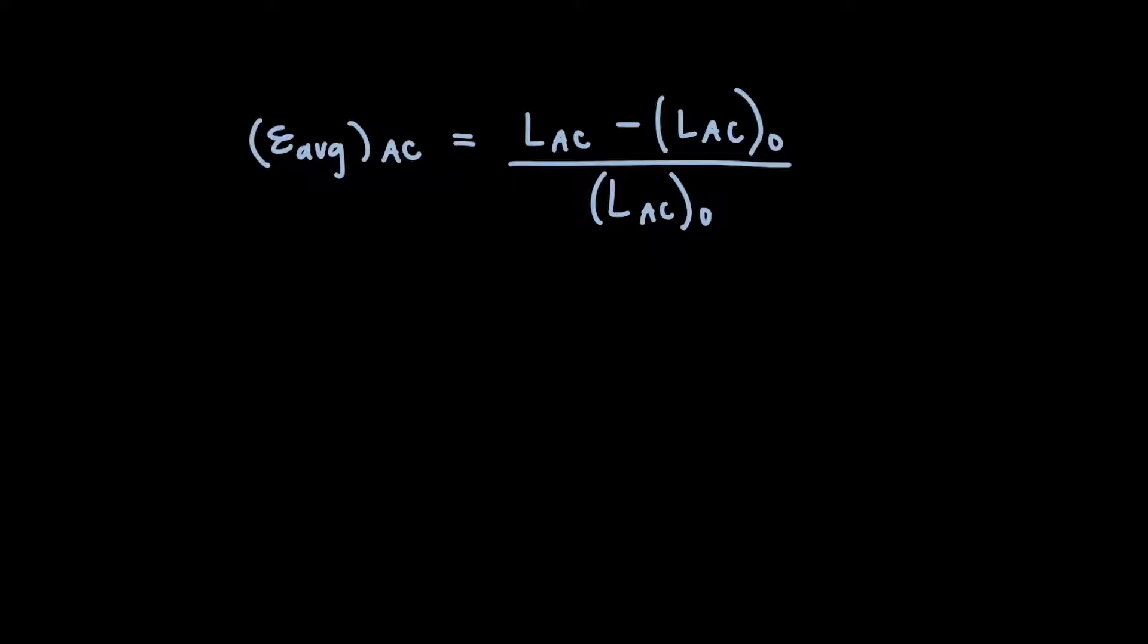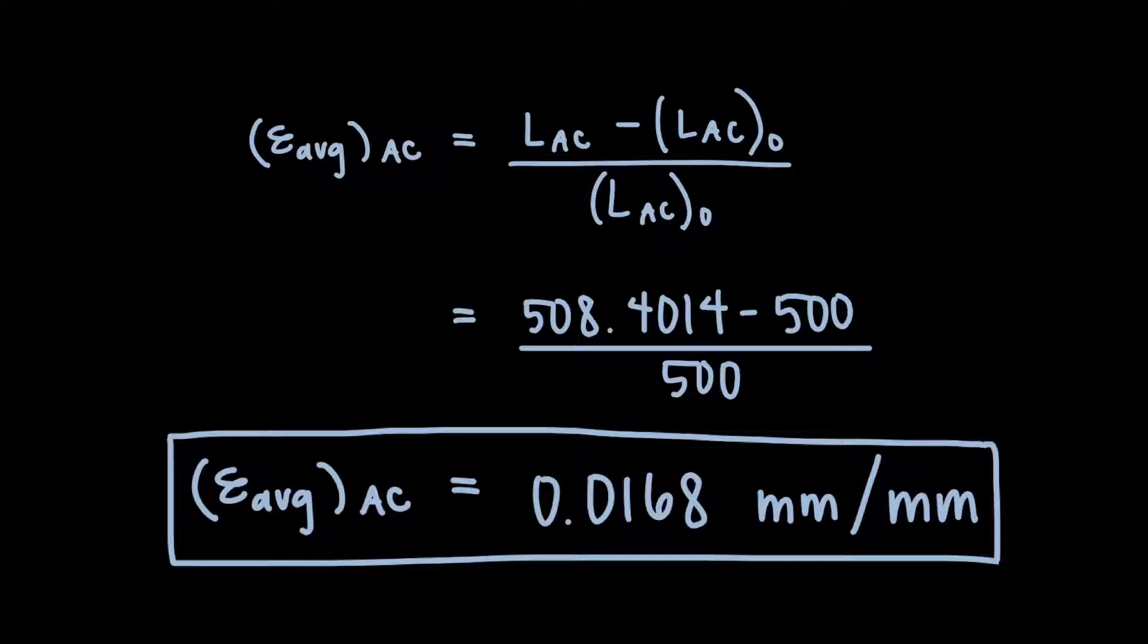We can finally bring back the normal strain equation and plug in both the original length and new length values. After we do some simple algebra, we'll find that the average normal strain along diagonal AC is 0.0168 millimeters per millimeter.